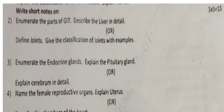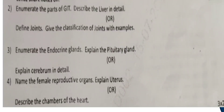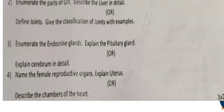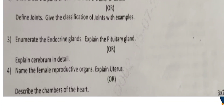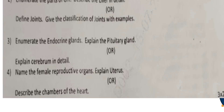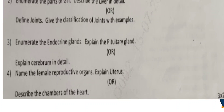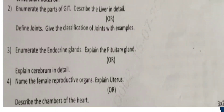Question 3: Enumerate the endocrine glands and explain the pituitary gland, OR explain cerebrum in detail. Question 4: Name the female reproductive organs and explain the uterus, OR describe the chambers of the heart.